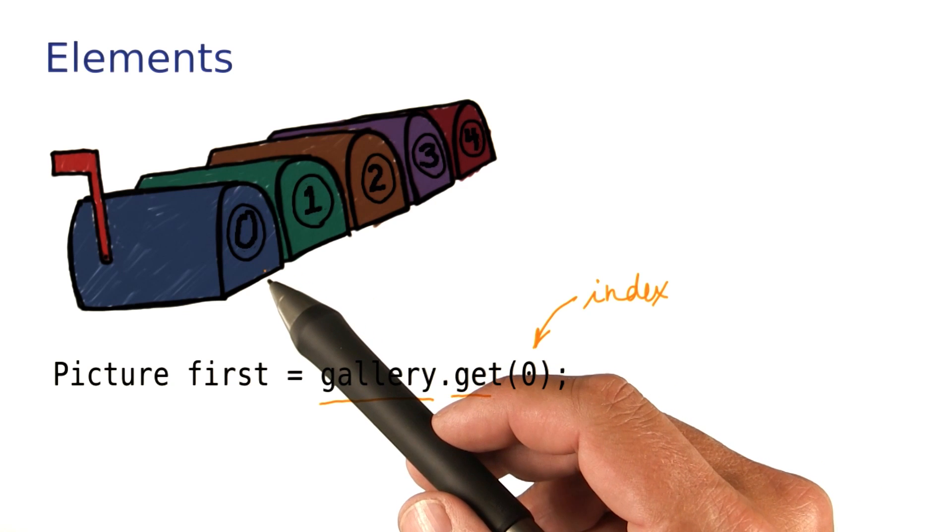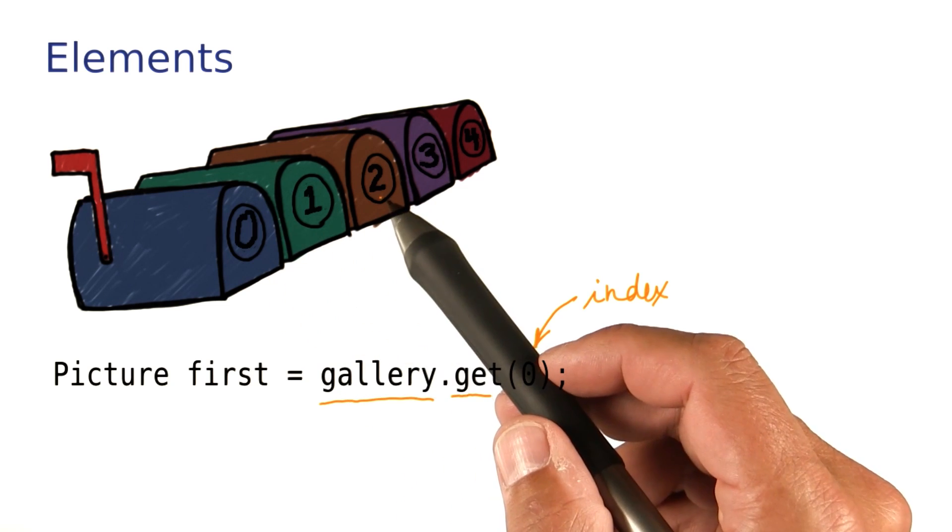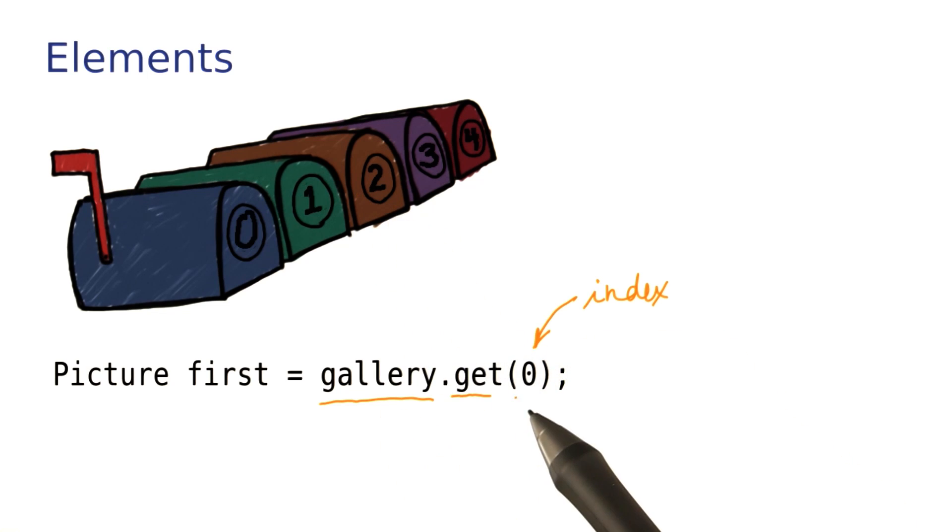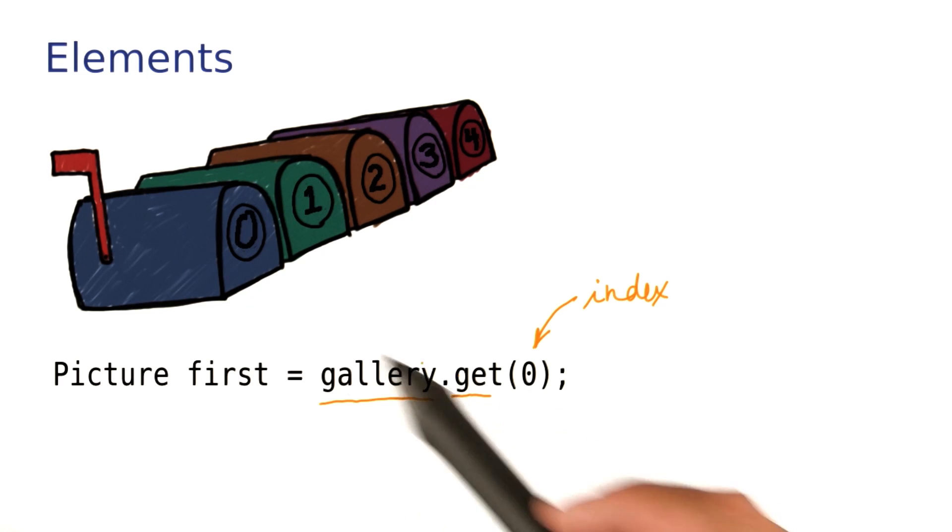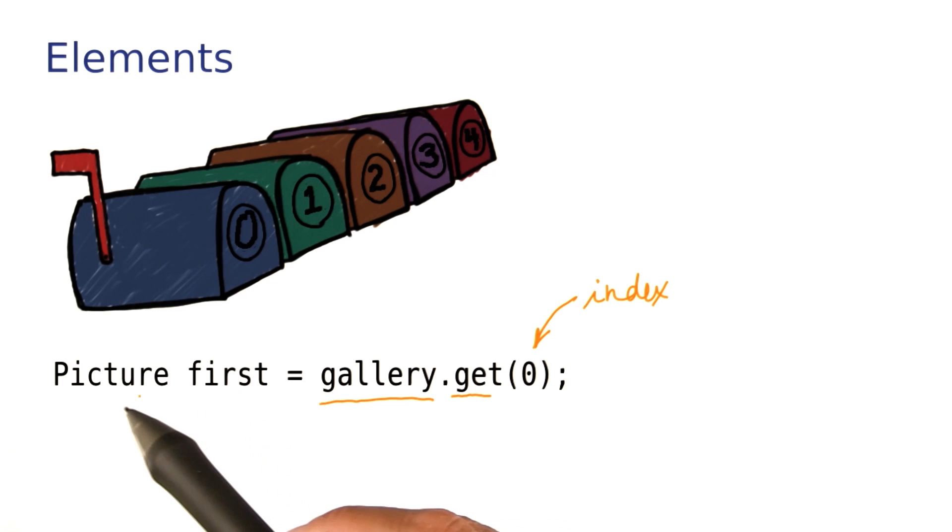So the first element is at position 0. The second element is at position 1. The third at position 2, and so on. The get method returns the elements stored at the index position. In our case, that's the initial element, and we store that in this variable.